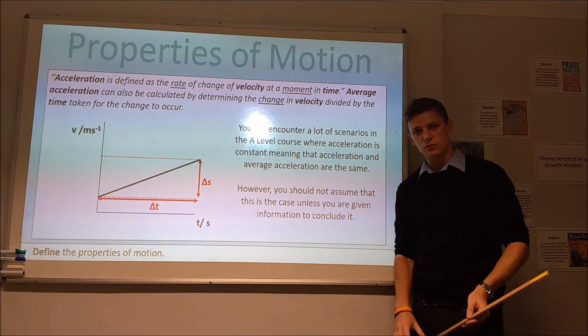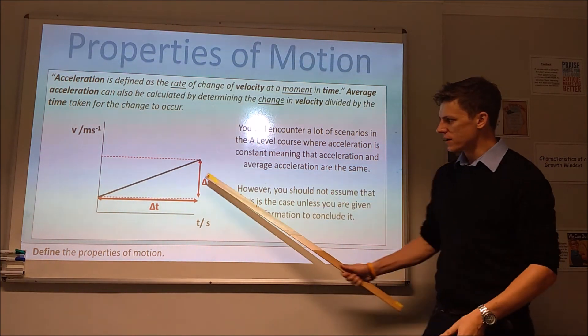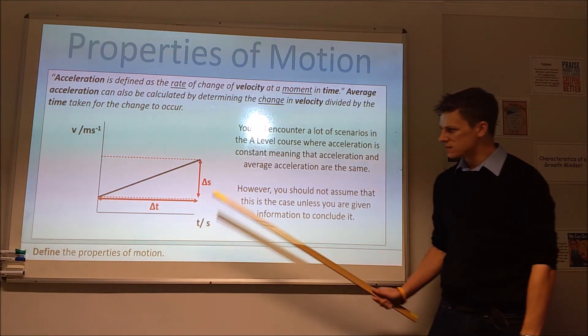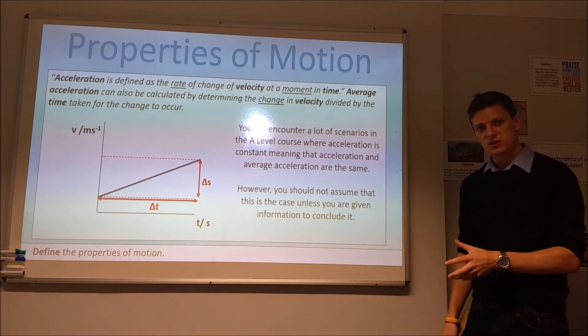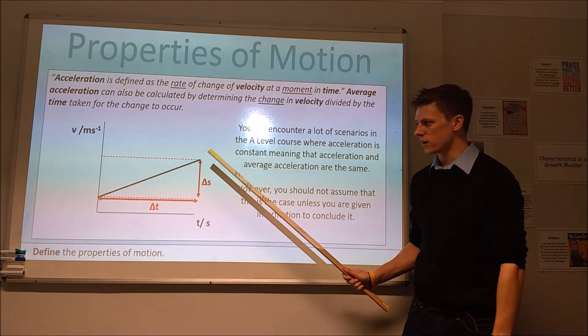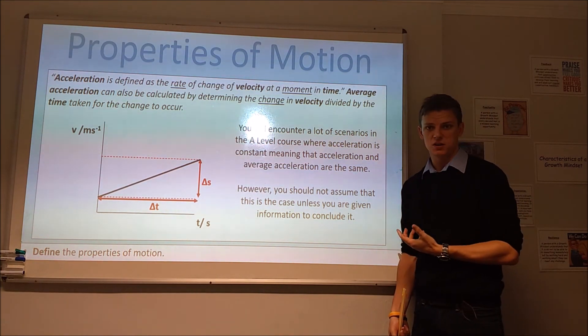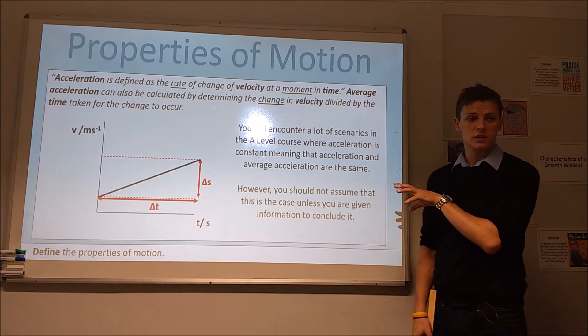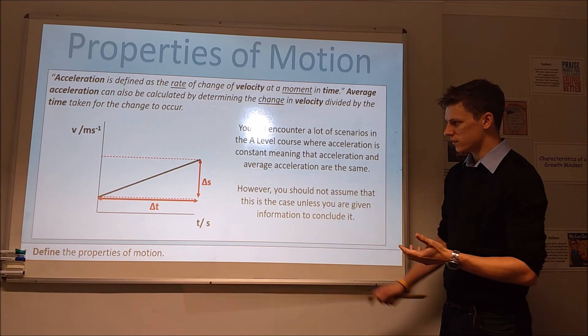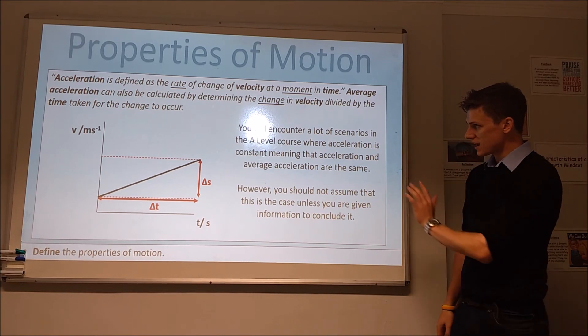Typically at this level, you will come across constant acceleration scenarios. If you have a straight line graph for the velocity versus time, that means the gradient is constant, which means acceleration is constant. If we worked out the acceleration at a specific point, or if we worked out acceleration over the period of time, we would get the same value because the gradients are the same. That's typically what you will encounter at this level. We deal mostly with constant acceleration, but we could have a really wavy graph, and it would be the same as we had with velocity.